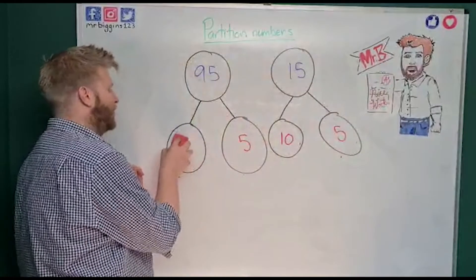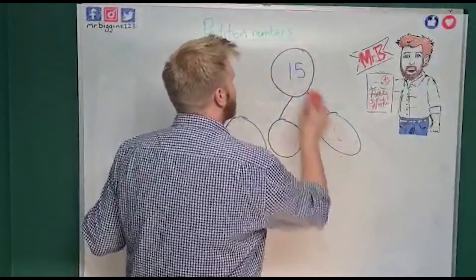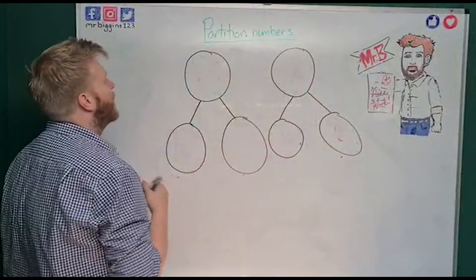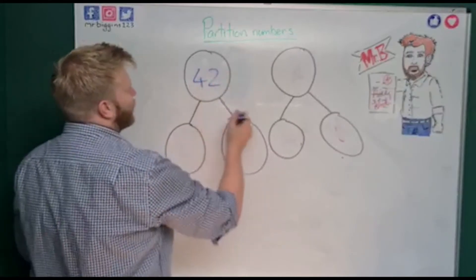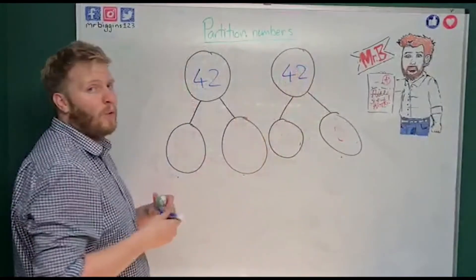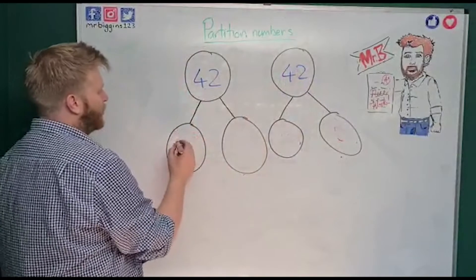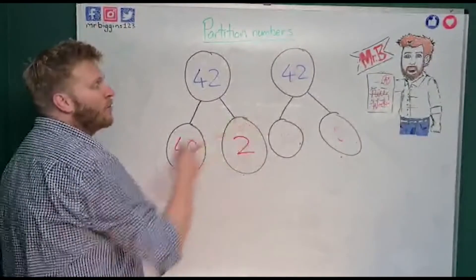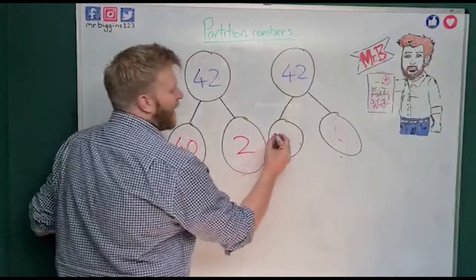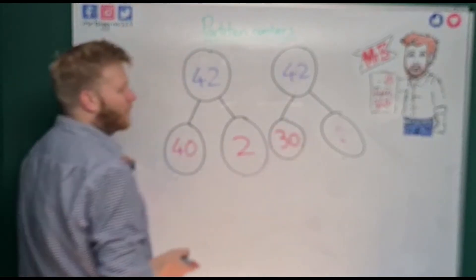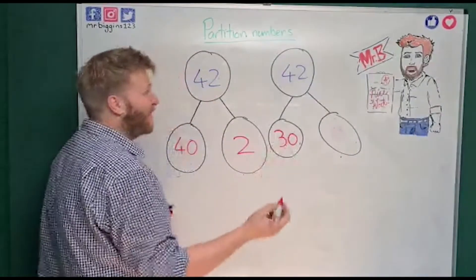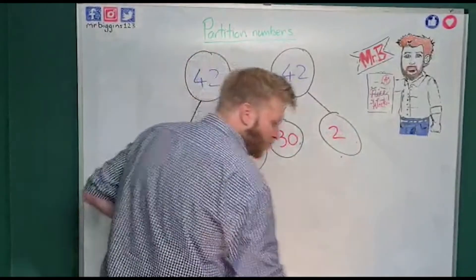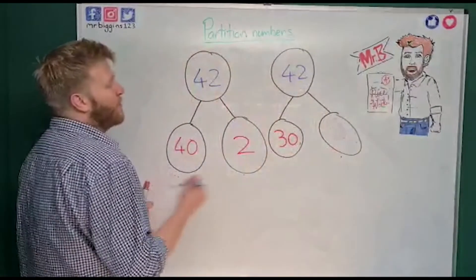Now I'm going to show you how to do some really hard partitioning. I'm going to use the number 42 for both examples. We know from what we've just done that we can break 42 down into four tens and two ones. But we can also break it into two different parts another way — so I could have 30 in one part. If I just put two in the other part I'd have 32, not 42, so I need to think carefully about what goes in that box.